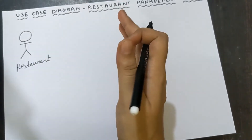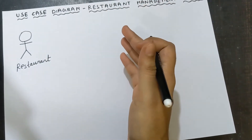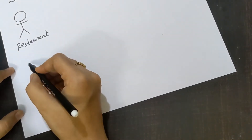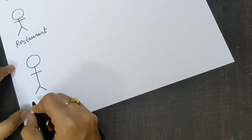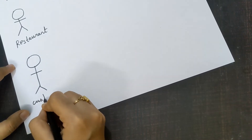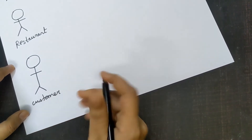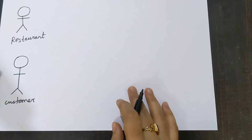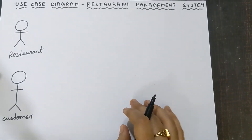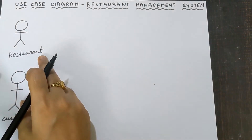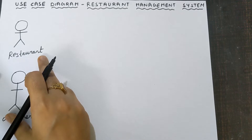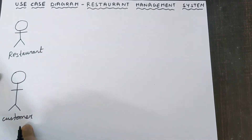The restaurant has to be there first. Next, the next actor can be customer. Customer is mandatory and also an important actor, because without customers the restaurant can't run properly. So customer is one actor and restaurant is one actor.